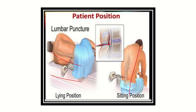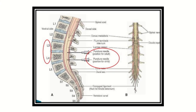The needle tip finally reaches the subarachnoid space. Here we can see the vertebral column, spinal cord, and the needle puncturing through the different structures into the subarachnoid space. The termination of the spinal cord is well above the needle insertion point. This is usually done between L3 and L4, or between L4 and L5. Performing it in upper spaces is very dangerous and requires expert skill.